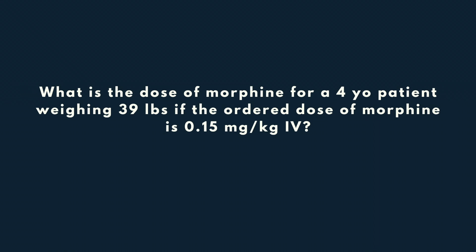The dose that has been ordered is 0.15 milligrams per kilogram, and the concentration of the morphine we'll be giving is 10 milligrams per one milliliter. Thinking back to one of the very first rules from my previous video, we need to make sure first and foremost that all of our units cancel. We should immediately see that our patient's weight is given in pounds while the ordered dose was given in kilograms, so we first need to convert this weight in pounds to a weight in kilograms.